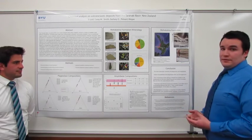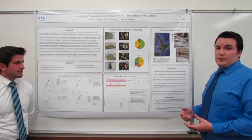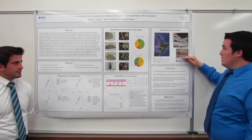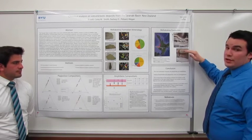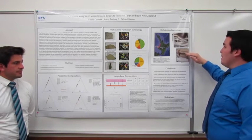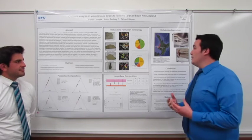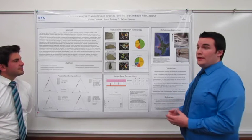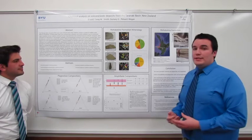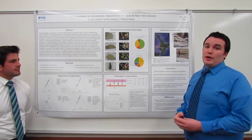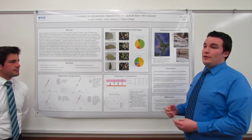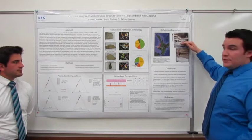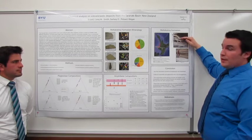Slope failure occurred and turbidites reworked the basin, burying the edifices of these volcanoes. Evidence for the density flow associated with the turbidites is seen here in this picture of normally graded bedding. The area also underwent uplift, which is why today the Mohakatino Formation deposits can be found along the beach.